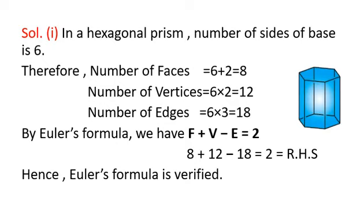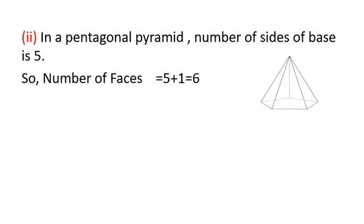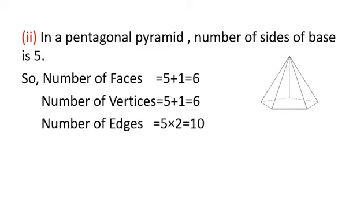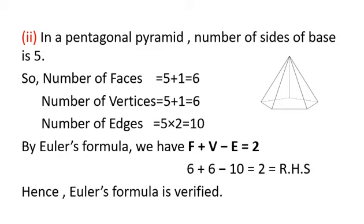For the pentagonal pyramid, number of sides of base s = 5. Using the table: faces = s + 1 = 6, vertices = s + 1 = 6, edges = s × 2 = 10. Verifying: F + V − E = 6 + 6 − 10 = 2, which equals the right-hand side. So Euler's formula is verified for the pentagonal pyramid as well.